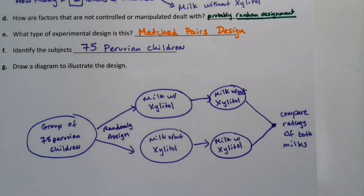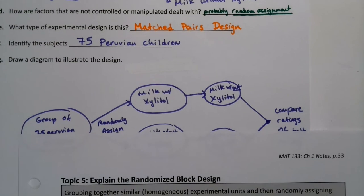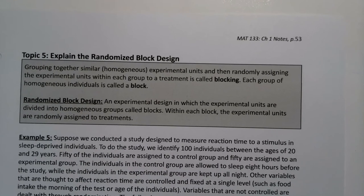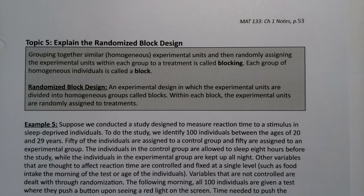The last type of experimental design is the randomized block design. This is when you group together similar — homogeneous — experimental units, and then randomly assign the experimental units within each group to a treatment. That process is called blocking, and each group of homogeneous individuals is called a block. In a randomized block design, the experimental units are divided into homogeneous groups called blocks, and within each block, the units are randomly assigned to treatments.